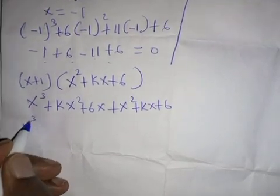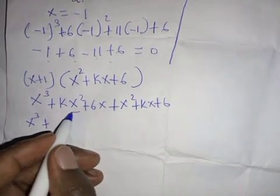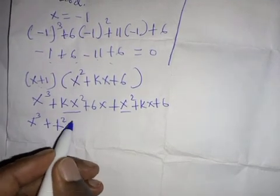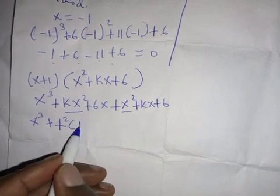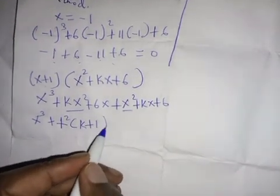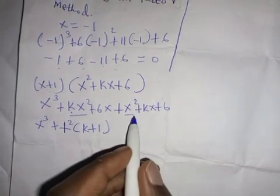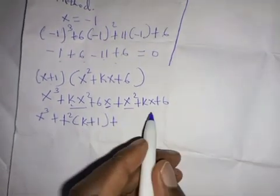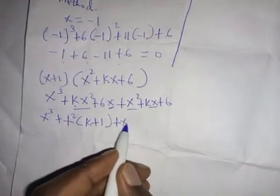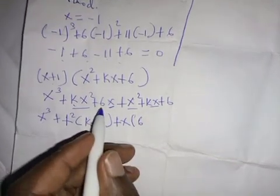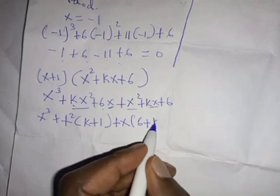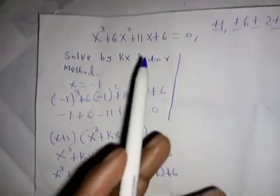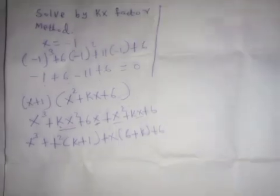We group the like terms together. Grouping the x squared terms we can factor out x squared and we are left with k plus one. Grouping the x terms — six x and kx — we factor out x to get six plus k. So our expanded quadratic expression is: x squared times (k plus one) plus x times (k plus six) plus six.